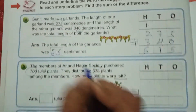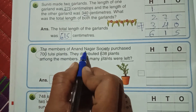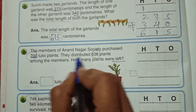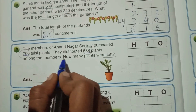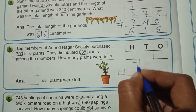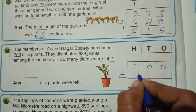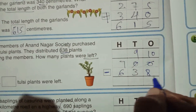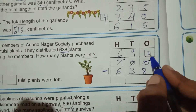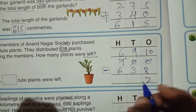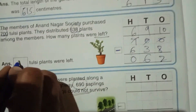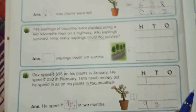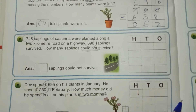The members of Anand Nagar Society purchased 700 tulsi plants. They distributed 638 plants among the members. How many plants were left? 700 minus 638: borrow to get 10 minus 8 is 2, 9 minus 3 is 6, 6 minus 6 is 0. Totally 62 tulsi plants were left. The remaining two problems you have to do in your textbook. In the next class we will meet with some more examples. Thank you.